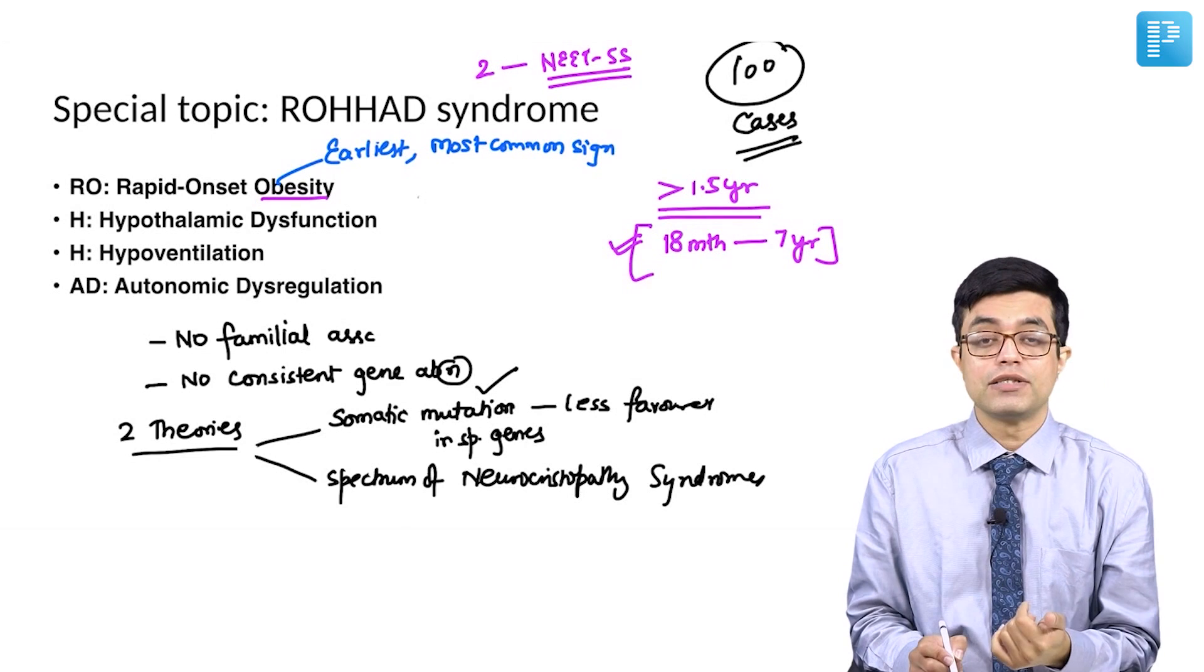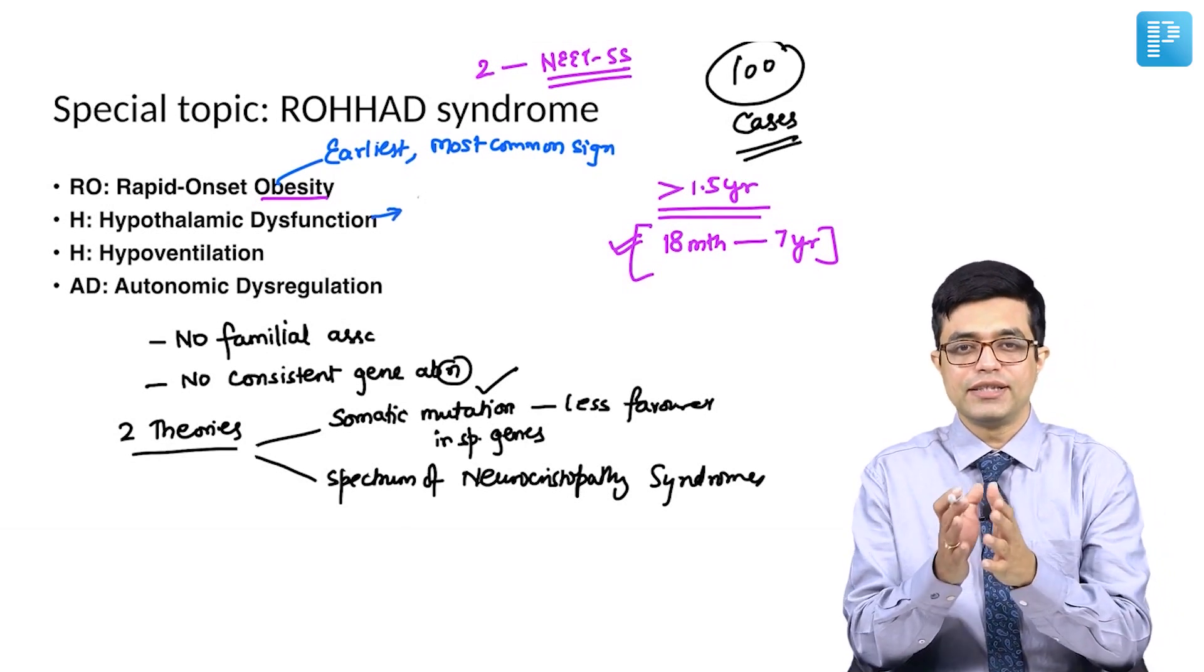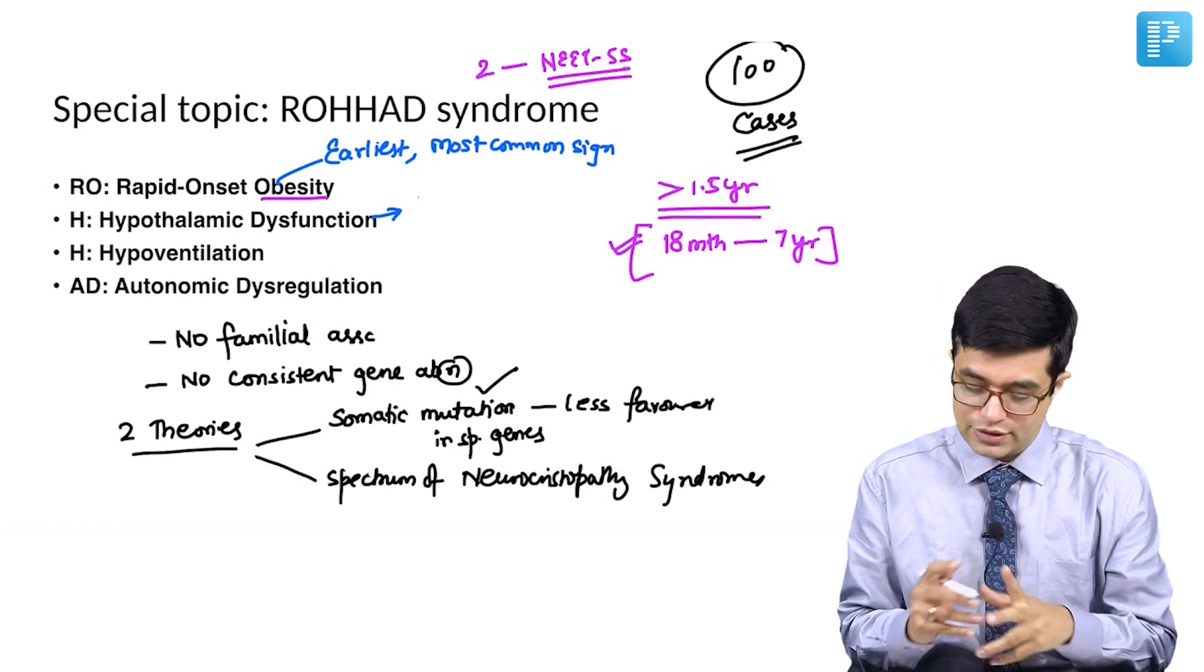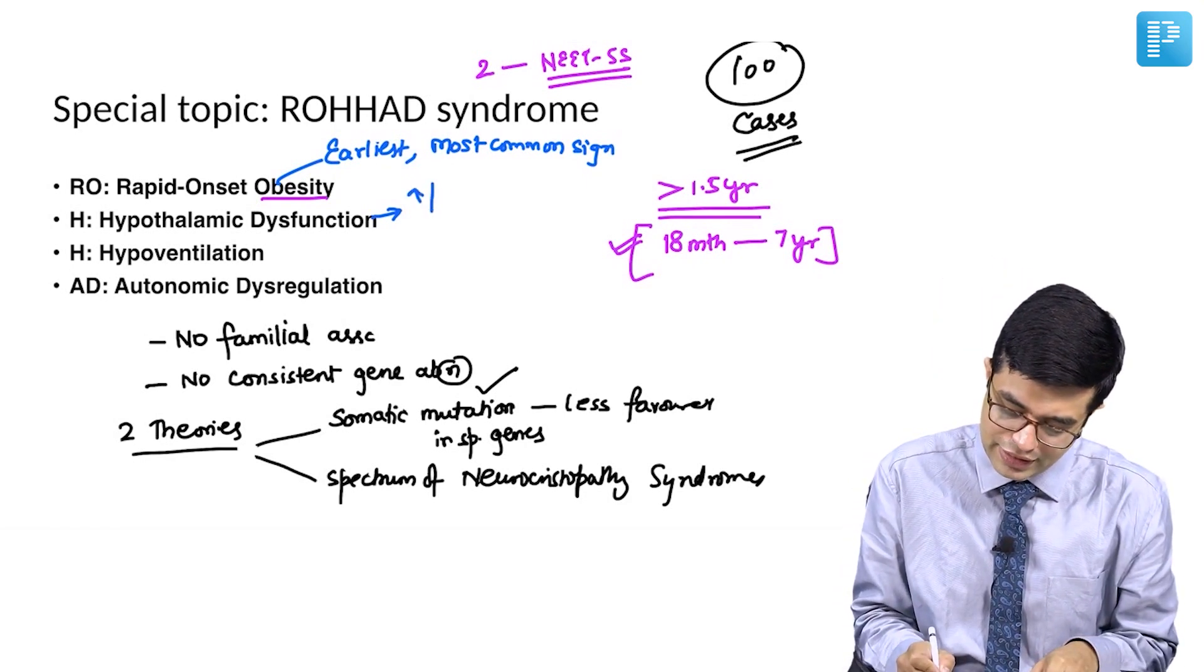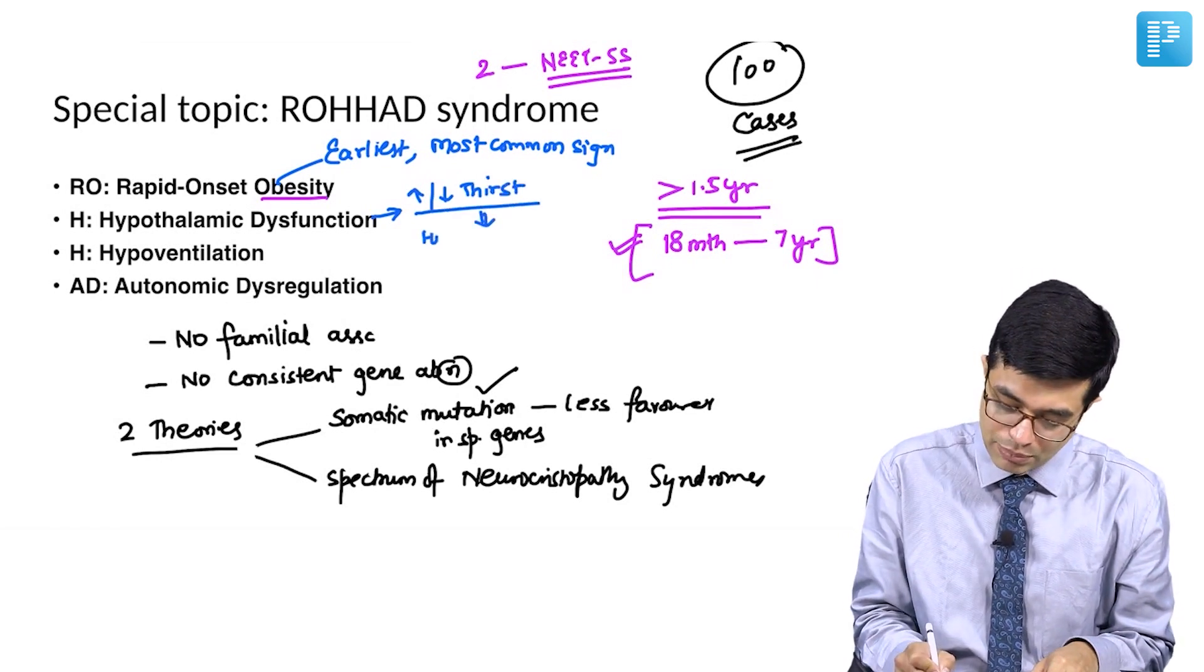Then the hypothalamic dysfunction comes. Hypothalamic dysfunction mostly is in the form of changes in the thirst levels. There may be increased or decreased thirst. This will decrease the water balance in the body producing hypo or hypernatremia.